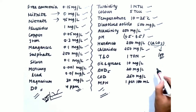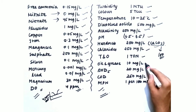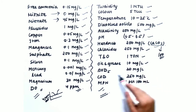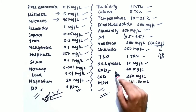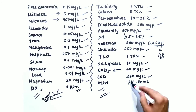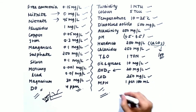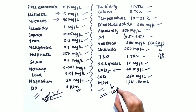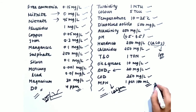Taste and odor should be 1 TON. Oil and grease should be 10 mg per liter. BOD5 — the 5-day standard BOD — is 20 mg per liter. COD, chemical oxygen demand, should be 250 mg per liter. MPN, Most Probable Number, which is used for coliform checking, should be 1 per 100 mL — this is considered very dangerous if exceeded.